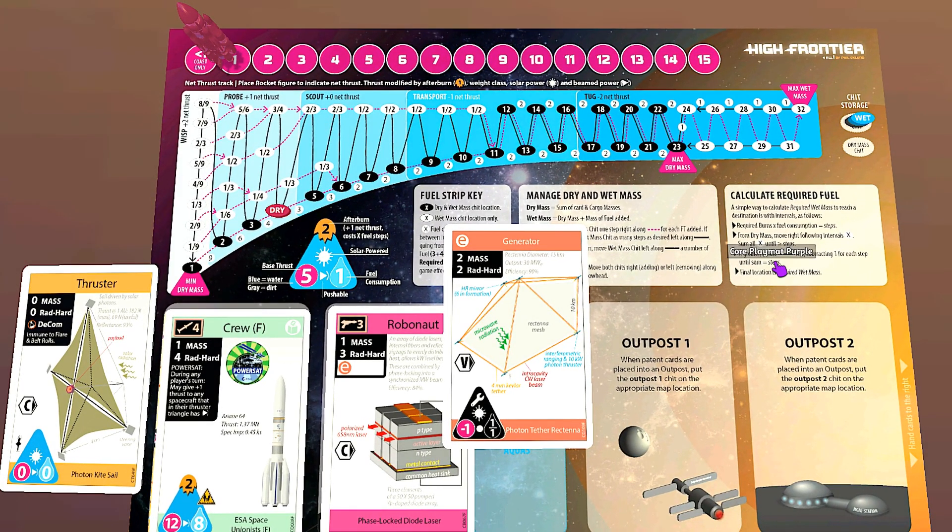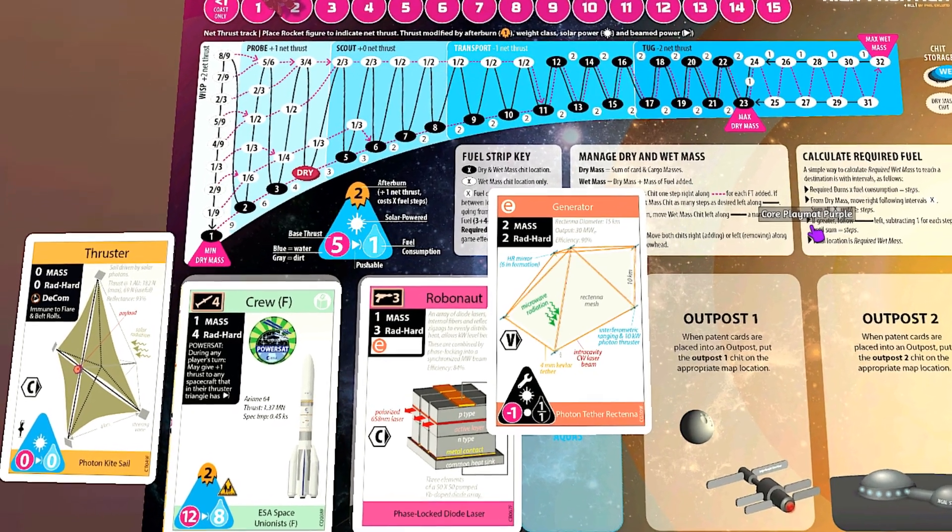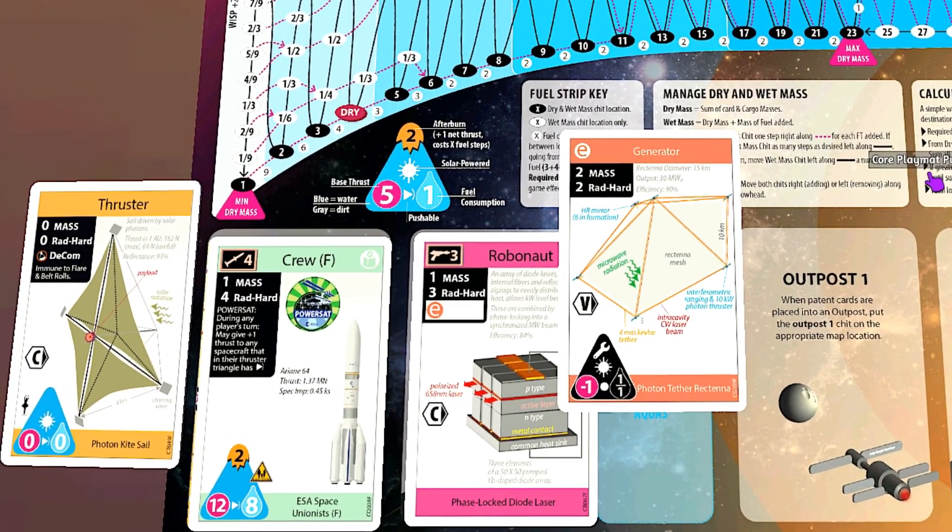In addition to that, we have the ESA power sat bonus of plus one per turn, which we will be using every time, basically. We're going to shoot a laser from Earth to help our little space sailboat along.